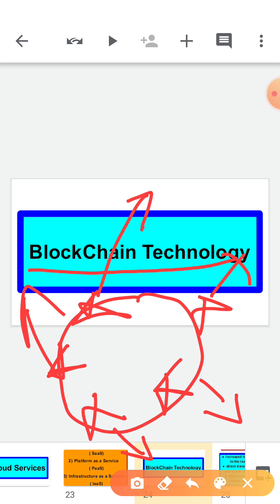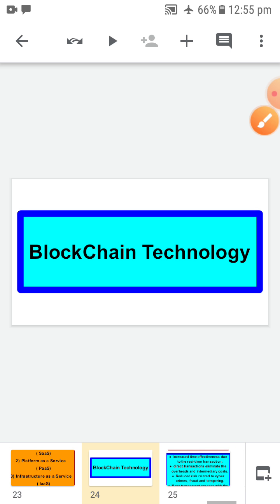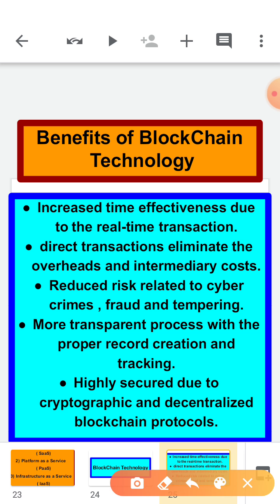Every transaction detail is sent to all the concerned clients, so everyone is going to be informed about the transaction and they can be secure. The benefits of using blockchain technology include: it increases time effectiveness due to real-time transaction; direct transaction eliminates the overheads of intermediary costs; it reduces risk related to cybercrime, fraud and tampering; more transparent process — if everybody knows about the transaction, it will be a transparent process; and highly secure due to cryptography and decentralized blockchain protocols.